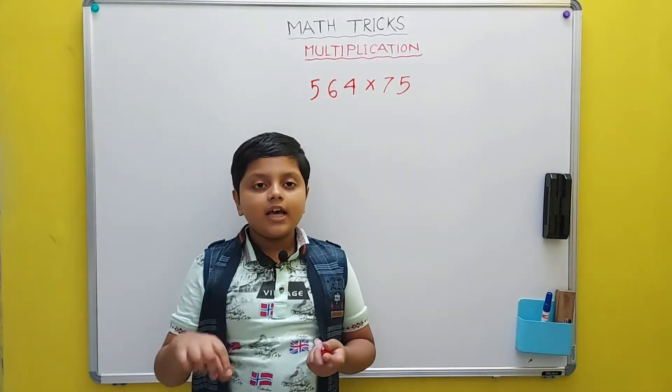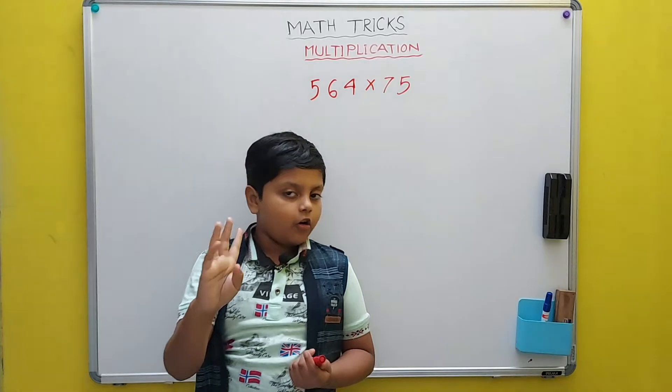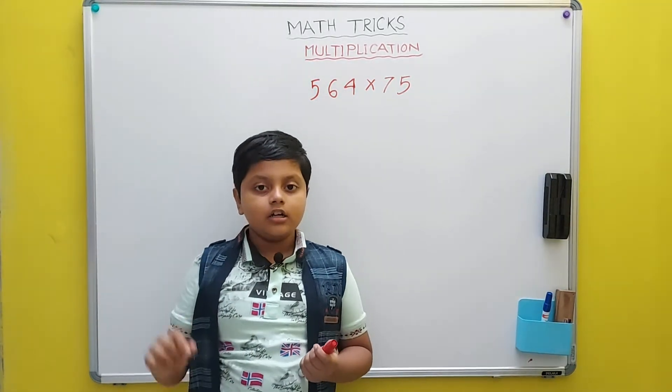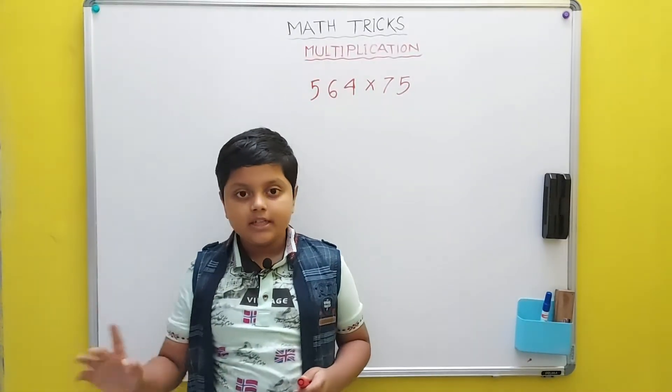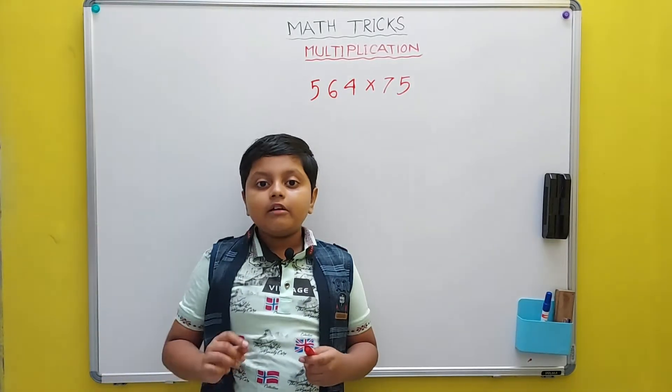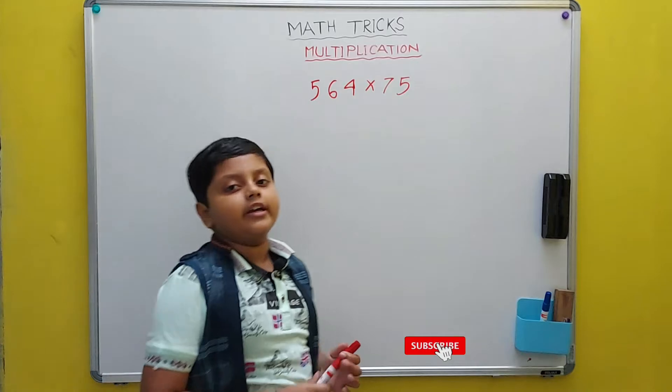Firstly, we have to divide 564 by 4, and then multiply the result by 300. We don't directly multiply it by 75. This will make it easier. And to make it even easier, we will split 300 into 3 and 100. So, let's start doing it.